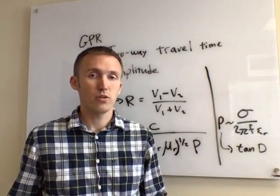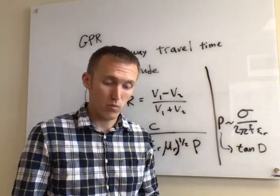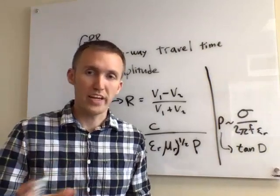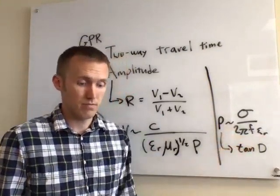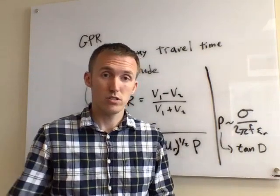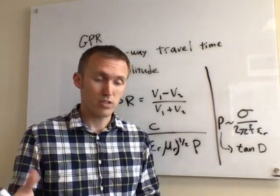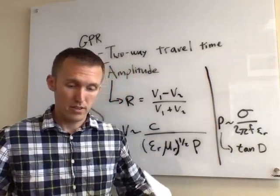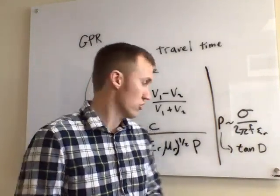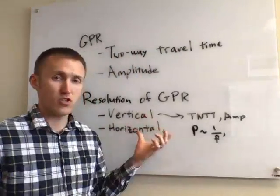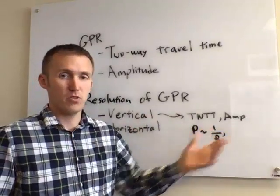This is why frequency is so important for GPR. The instruments you'll get will be designated by a particular frequency — usually a center frequency with some range around it. What I'm talking about essentially is resolution: whether you can resolve two pipes that are close together, or resolve spatial variations where a pipe begins and ends — those are all issues of resolution. When we talk about resolution with GPR, there are two kinds: horizontal and vertical. Vertical resolution is related to your two-way travel time and amplitude.